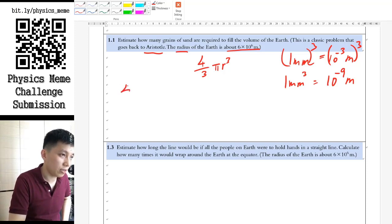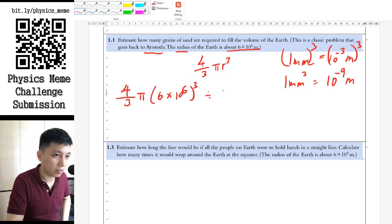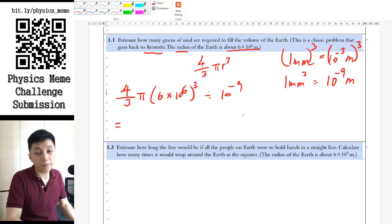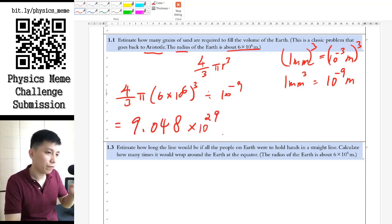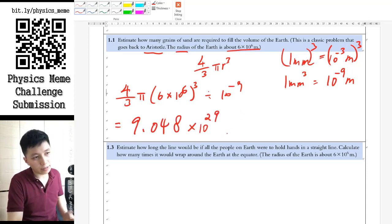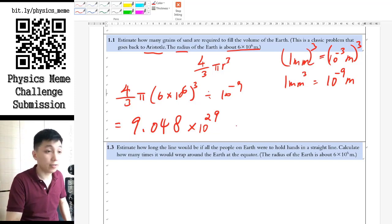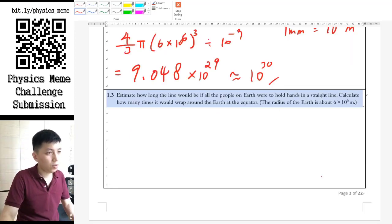So at the end, what you can do is just like a normal simple math question for this one. Then it will be simply the volume of the earth, 4/3 pi times 6 times 10 to the power of 6 cubed, divided by 10 to the power of negative 9. And so you just have to use your calculator to find out the answer. So from your calculator, you should find the answer as 9.0 something times 10 to the power of 29. If you'd like to, you can also round it up to roughly 10 to the power of 30 as well.